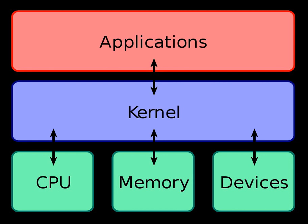Monolithic kernels, which have traditionally been used by Unix-like operating systems, contain all the operating system core functions and the device drivers. This is the traditional design of Unix systems. A monolithic kernel is one single program that contains all of the code necessary to perform every kernel-related task. Every part which is to be accessed by most programs and cannot be put in a library is in the kernel space — device drivers, scheduler, memory handling, file systems, network stacks. Many system calls are provided to applications to allow them to access all those services.